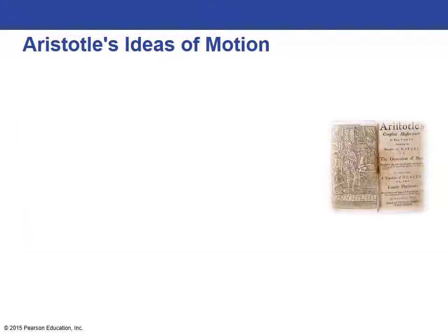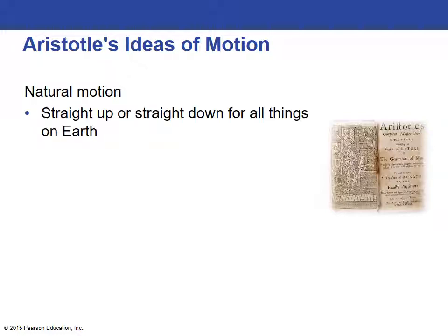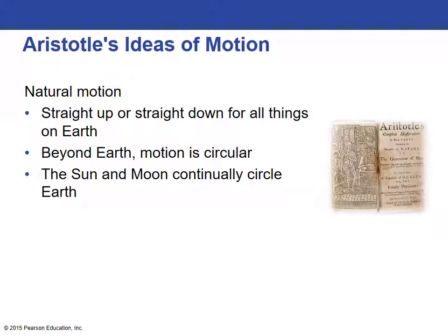So Aristotle has the idea of natural motion. Generally, things on earth go straight up and down. They already knew that things they could see in the heavens moved in circles — that orbits were circular — and they were of the opinion that the sun and the moon circled the earth. He contrasted that with violent motion.